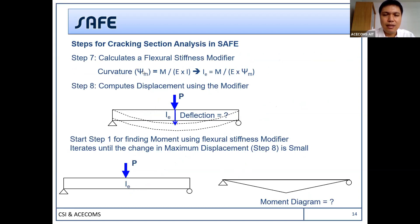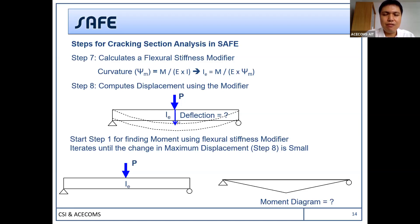After getting the curvature, you can determine the structural stiffness. Previously we started with I-gross; now we compute I-effective and use it to analyze again and get the deflection — this will be the real deflection. After getting the deflection and I-effective, the program calculates again using I-effective, starting from step 1 to find the new moment. The program repeats from step 1 to step 8 again and again until the deflection from the previous step and the current step is very small, then the program stops.